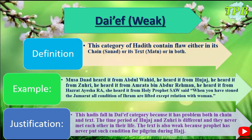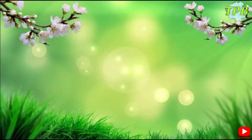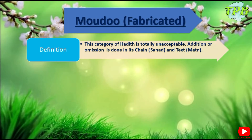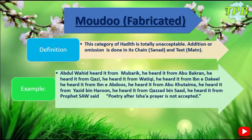Now the last one: Maudu — fabricated. This category of Hadith is totally unacceptable; addition or omission is done in its chain, Sanad, or in text, Matan. Example: Abdul Wahid heard it from Mubarak, Mubarak heard it from Abu Bakrarn, Abu Bakrarn heard it from Qazi who heard it from Vatiki.